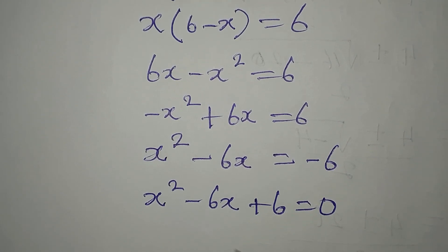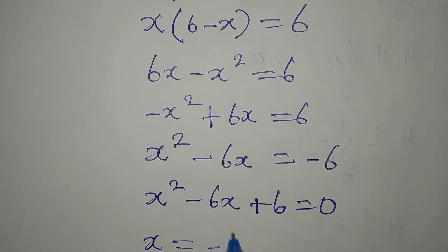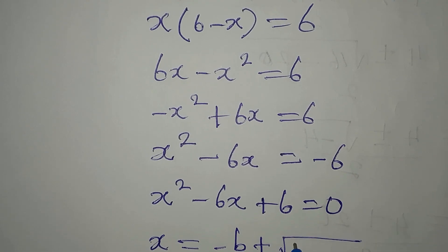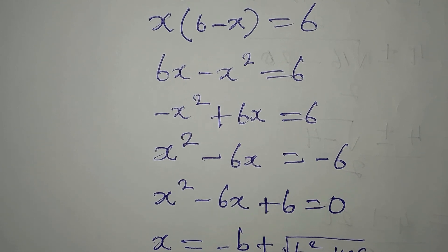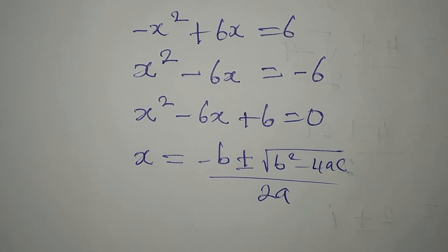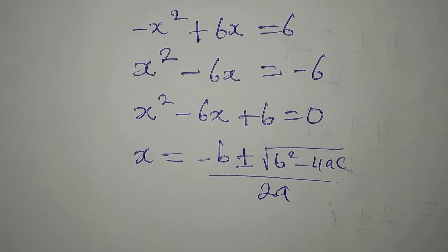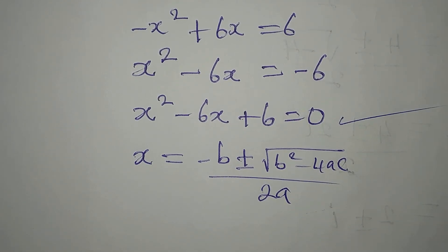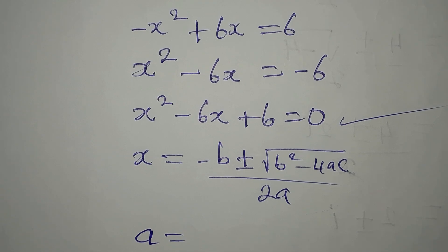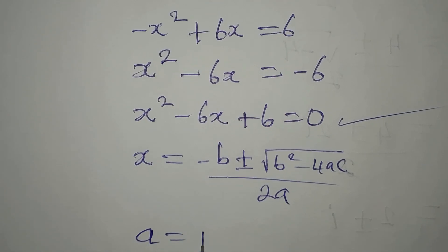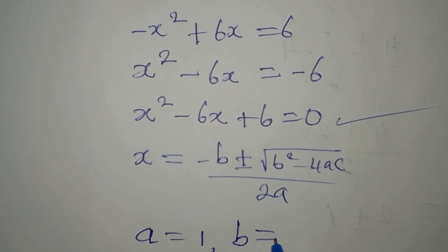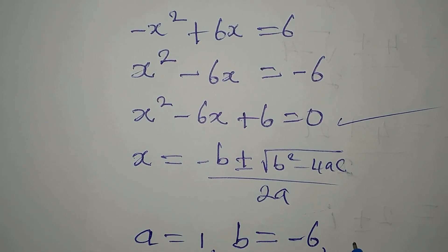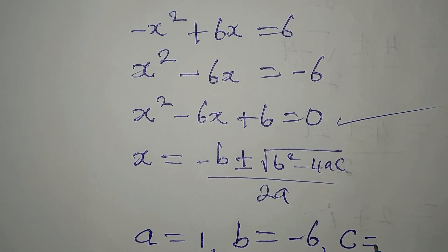Since factoring is not possible, we use the formula method. The quadratic general formula is: x equals negative b plus or minus the square root of b squared minus 4ac, all over 2a. From our equation x squared minus 6x plus 6 equals 0, the coefficient of the first term is a equals 1, the coefficient of the second term is b equals negative 6, and the constant is c equals positive 6.